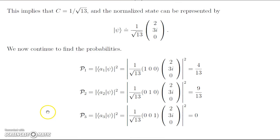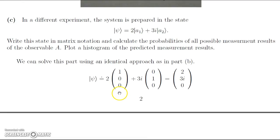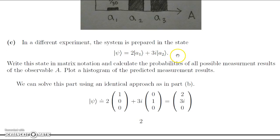We find the probabilities using the same approach. Looking at the first component gives 4 over 13, the second component gives 9 over 13, and the third component is 0, giving a probability of 0. This makes sense — since the state vector psi has no component in the A3 direction, there is no possibility of measuring A3. Representing these basis vectors as directions along an axis, this state vector has no component in that direction, so the probability is 0.